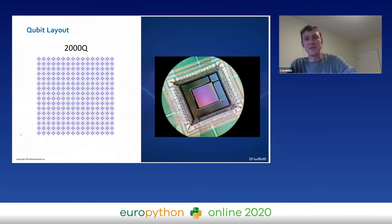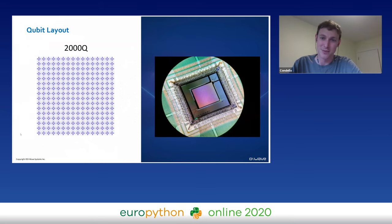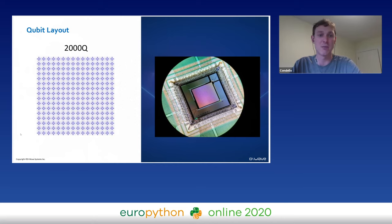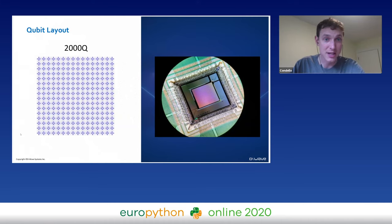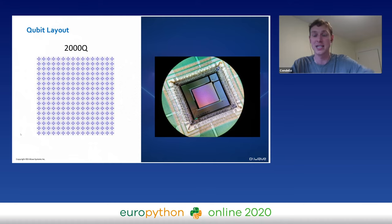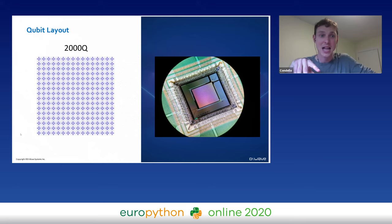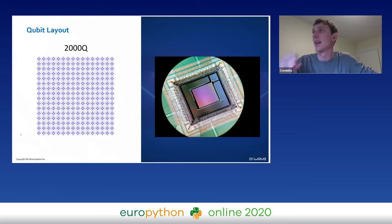Zooming in further on the chip picture, you can make out a checkerboard shape. Each square in that checkerboard corresponds to eight qubits on our quantum processing unit. On the left, you can see the picture of the connectivity of our graph — each of those eight-qubit tiles is connected to the tiles to the north, south, east, and west of it, so each qubit is connected to six other qubits.